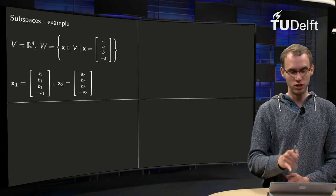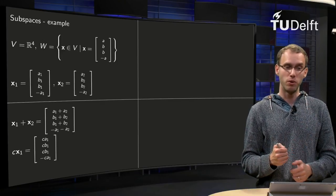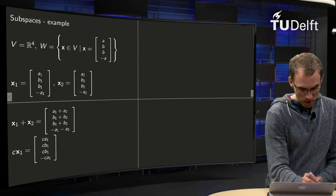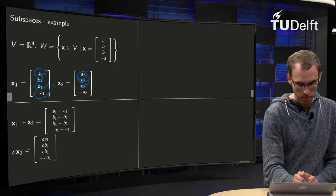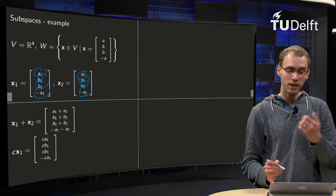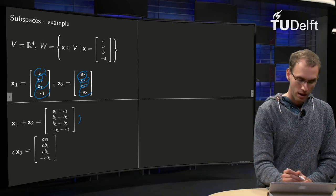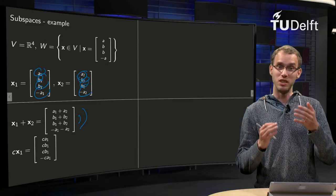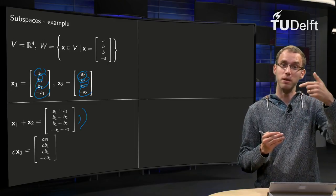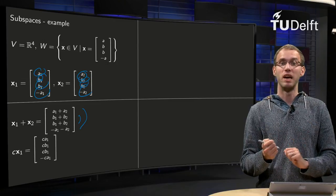So let us see whether that is true. First we take the sum x1 plus x2. We get first component A1 plus A2, then B1 plus B2, then B1 plus B2, and then -A1 minus A2. The middle components are still the same, and the outer components are the same up to sign. So this is again of the form (A, B, B, -A), meaning x1 plus x2 is also in W.